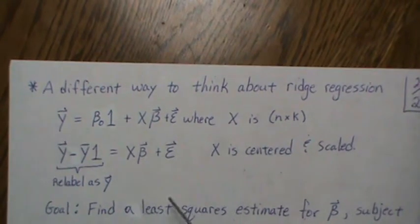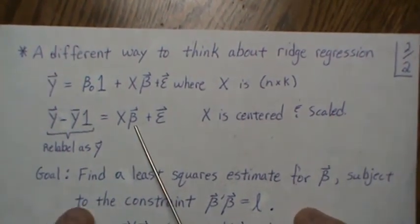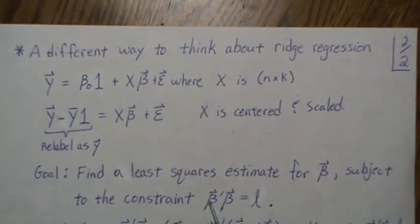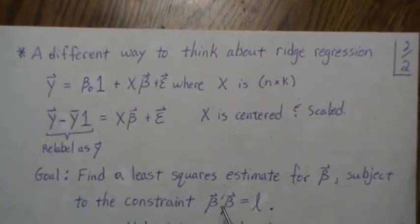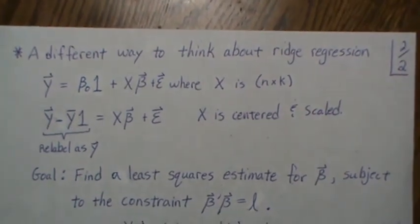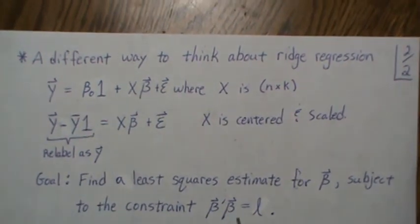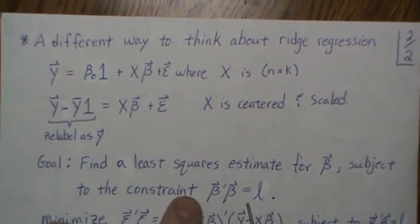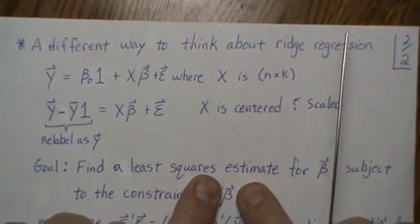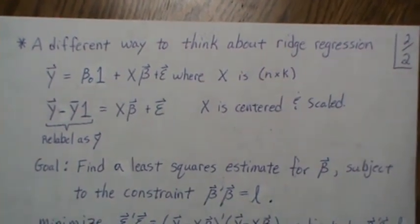Now the goal is to find an estimate for beta, so we want to find the least squares estimate for beta subject to the constraint that the squared length of our beta vector is L. We're restricting it somewhat, and this is ridge regression. Now what we would change for lasso regression: instead of saying that this inner product is L, we'd say the absolute value of that beta parameter is L. That's the difference between ridge regression and lasso regression.